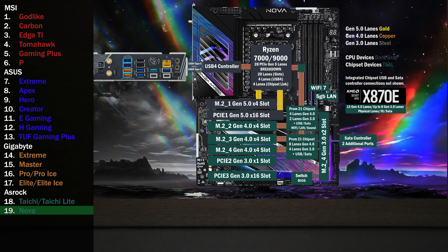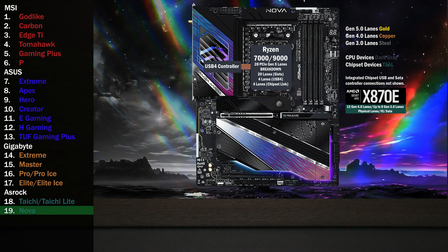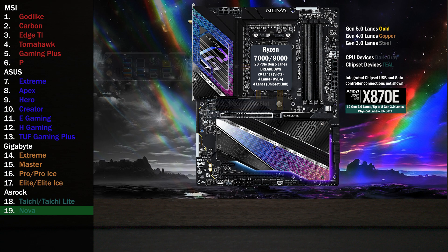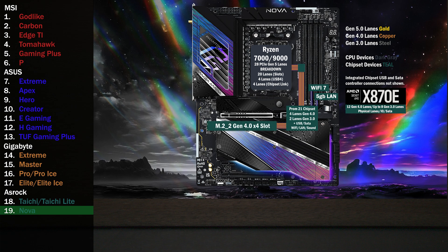Here's the PCIe connectivity of the ASRock X870E Nova. Four Gen 4 lanes go to the USB 4 controller and connect the two Type-C ports on the back. Four lanes at Gen 5 connect to the main M.2. Sixteen unswitchable lanes go to the x16 slot at Gen 5. Starting with the first chip, we have four lanes of Gen 4 and two lanes of Gen 3, in addition to the USB and SATA controllers. One lane each goes to Wi-Fi 7 and 5GB LAN at Gen 3. Four lanes go to a Gen 4 M.2.